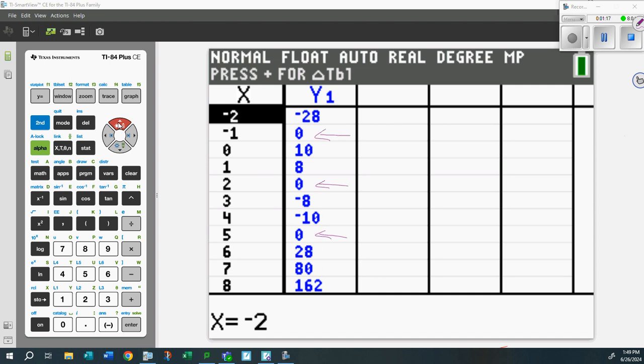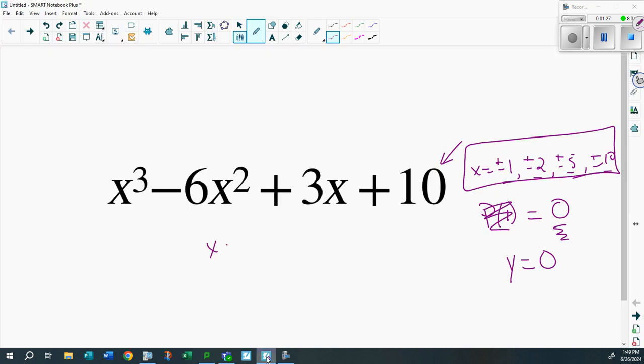it equals zero here, giving your factors: x equals five, x equals two, and x equals minus one. Look at that - you've factored it! All courtesy of the fact that you're looking for the x-intercept, and it happens